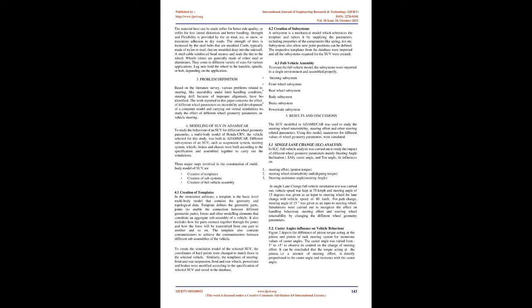The strength of tires is increased by the steel belts molded into the tire beneath the tread. The sidewall makes up the distance between the rim and the tread; the material here can be made softer for better ride quality, or stiffer for less lateral distortion and better handling. Strength and flexibility is provided by cords, typically made of nylon or steel, molded deep into the sidewall. A steel cable reinforced bead secures and seals the tire to the wheel. Wheels, or rims, are generally made of either steel or aluminum, and come in different sizes for various applications. Lug nuts hold the wheel to the knuckle, spindle, or hub, depending on the application.